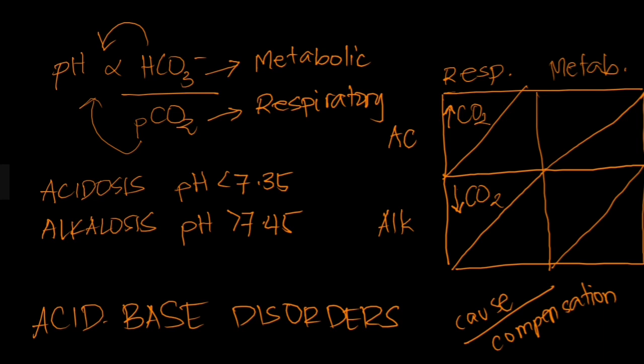Let's go to metabolic acidosis. Metabolic acidosis is a decrease in pH. This is metabolic, so the decrease in pH would be due to a shift in bicarbonate levels. For the pH to decrease, bicarbonate should also decrease — remember, bicarbonate and pH are directly proportional.